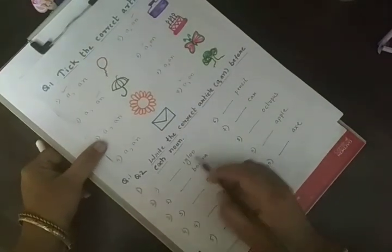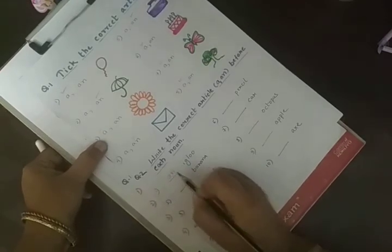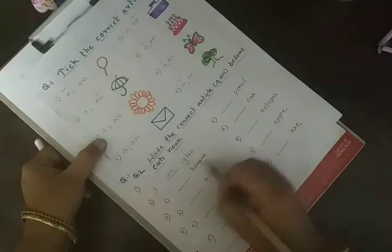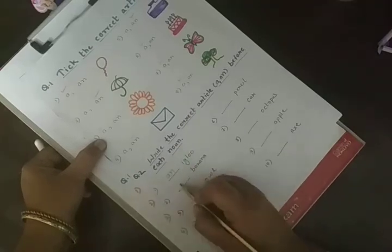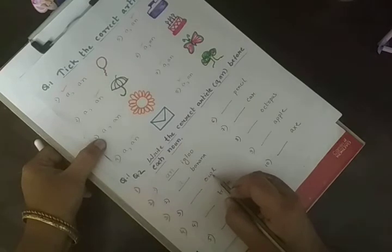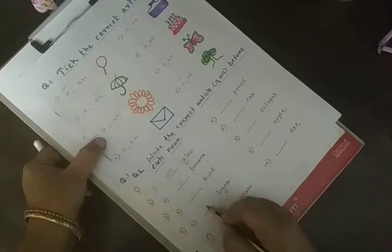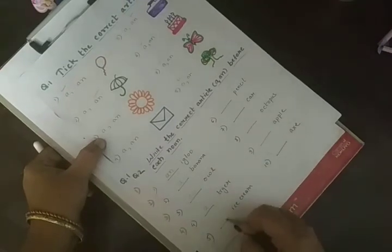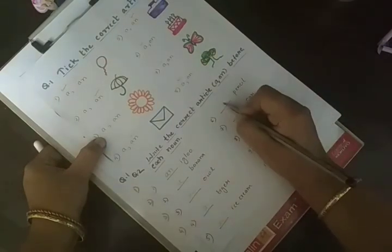Igloo. I. Vowel sound. So I can write an igloo. Owl. O. It is again vowel sound. So an owl. Tiger. T is a consonant sound. So a tiger. Ice cream. Vowel sound. Then an ice cream. Pencil. Consonant sound. So a pencil.